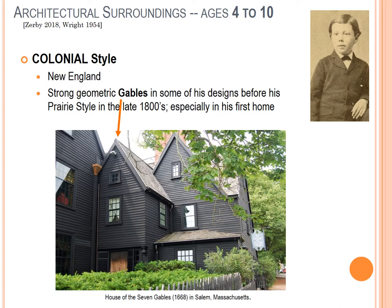The House of Seven Gables is an example of colonial style, with its prominent gable roof shapes. Frank Lloyd Wright is mostly known for horizontal styles and the prairie style later on, but his early works often echoed some of these earliest influences.